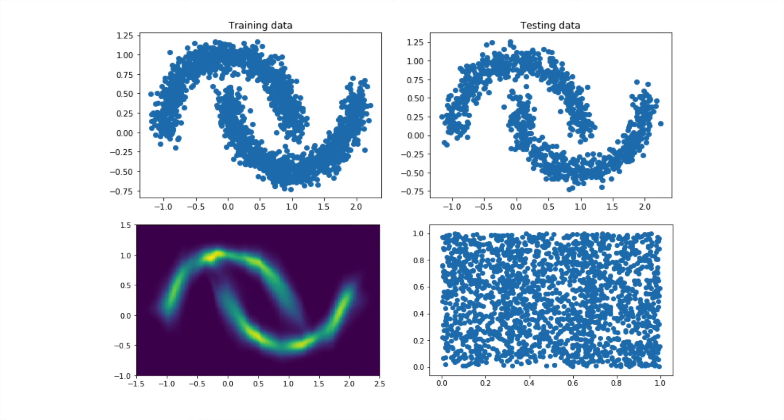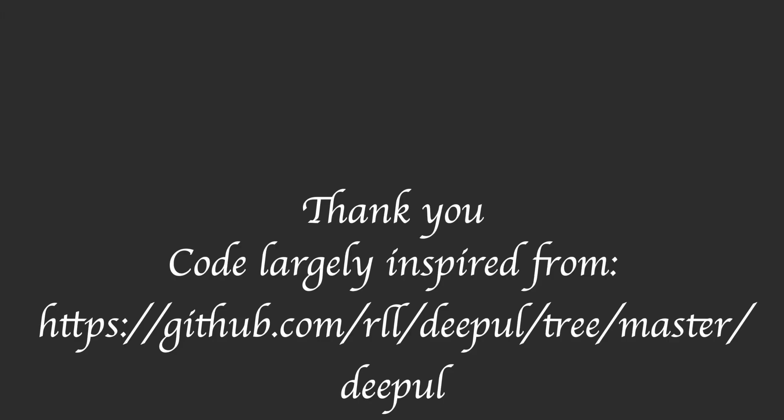That's the idea behind making normalizing flows work for two dimensions. In the next video, we will see how we can extend the same idea to make it work for more than two dimensions. Lastly, the credits for most of the ideas and the code go to the deep unsupervised learning reports from UC Berkeley. Check out this repository. Thank you.